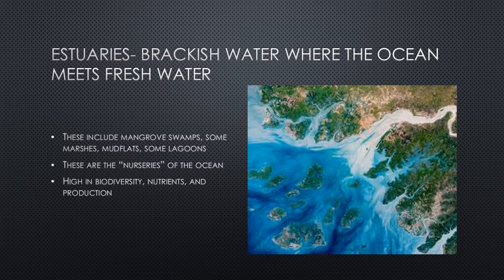Estuaries are the nurseries of the ocean — two-thirds of fish and shellfish spawn in these areas. They are super high in biodiversity, nutrients, and productivity, so these are the areas we try to protect the most. When something diminishes the health of an estuary — like the dinoflagellates affecting the Pamlico Sound — it has long-reaching effects on ocean biodiversity.